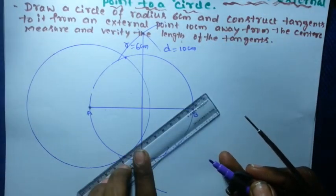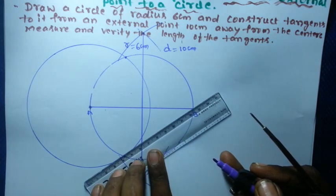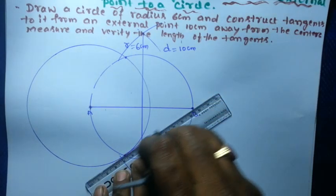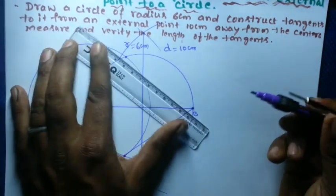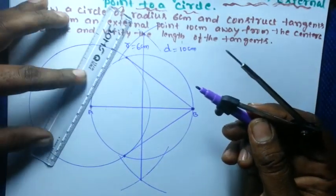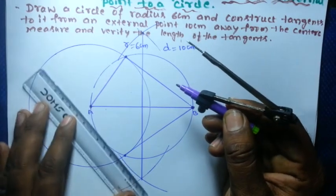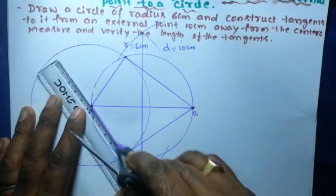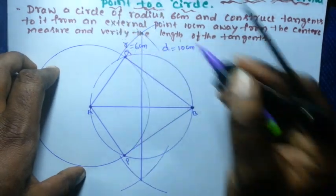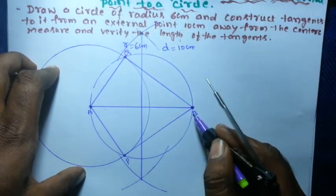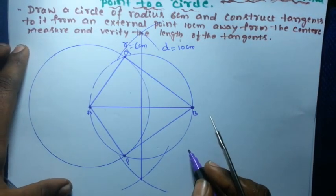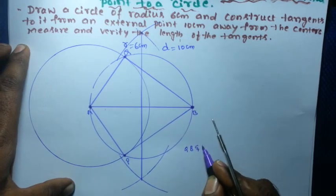This second circle intersects the first circle at two points. From B, draw lines to each of these intersection points P and Q. These lines BP and BQ are the tangents drawn to the circle from the external point B.